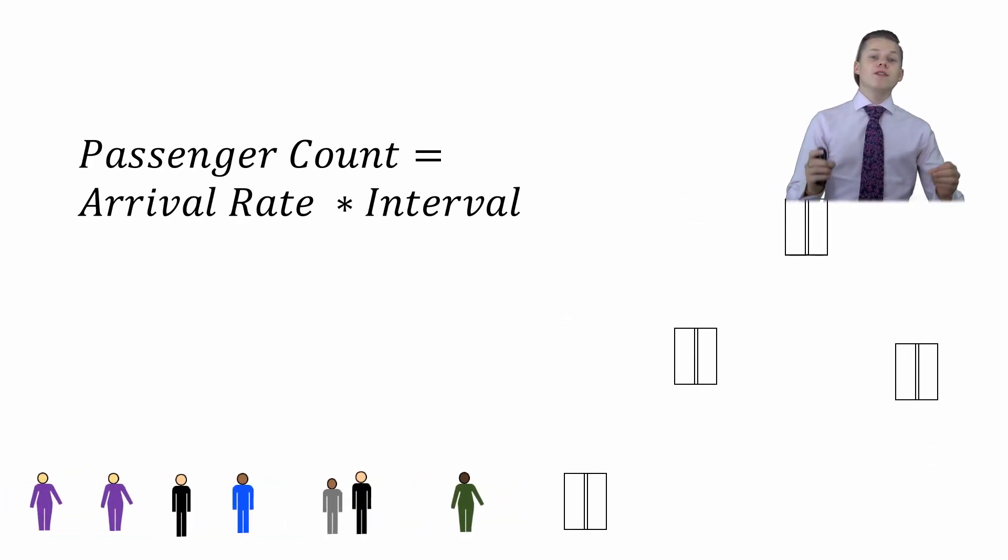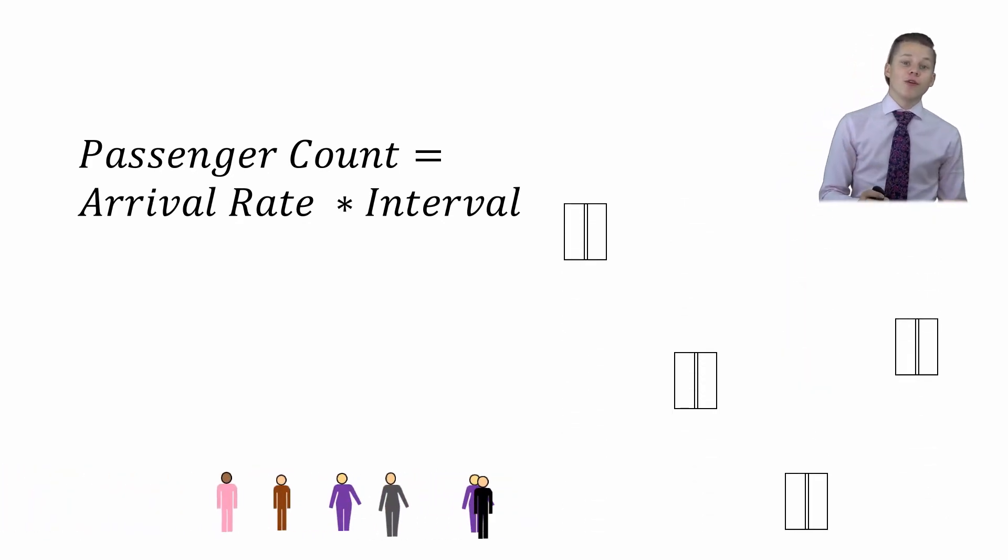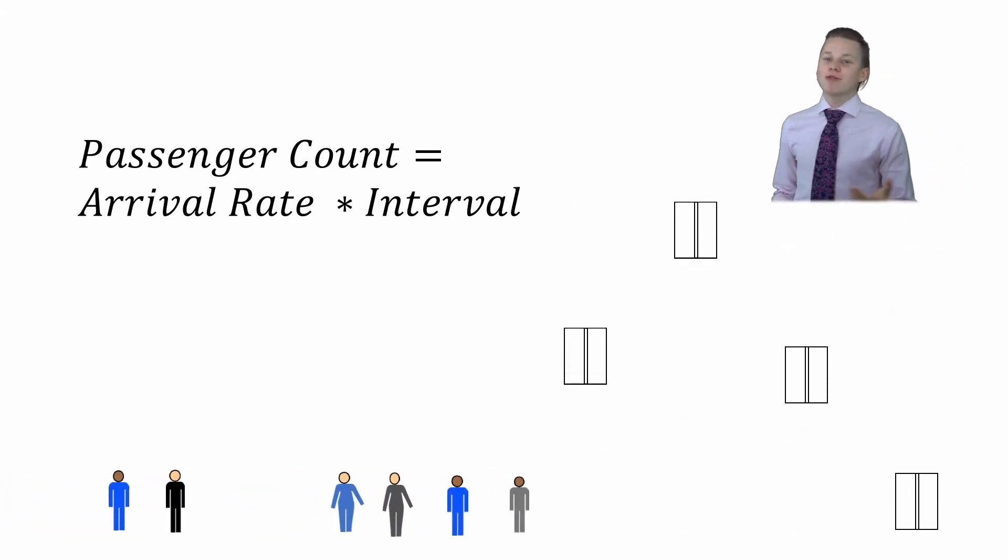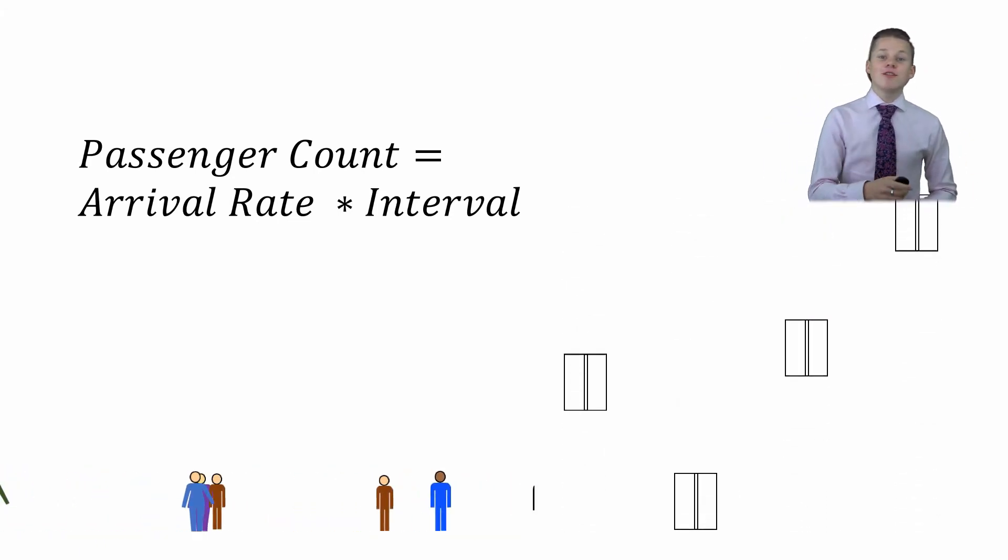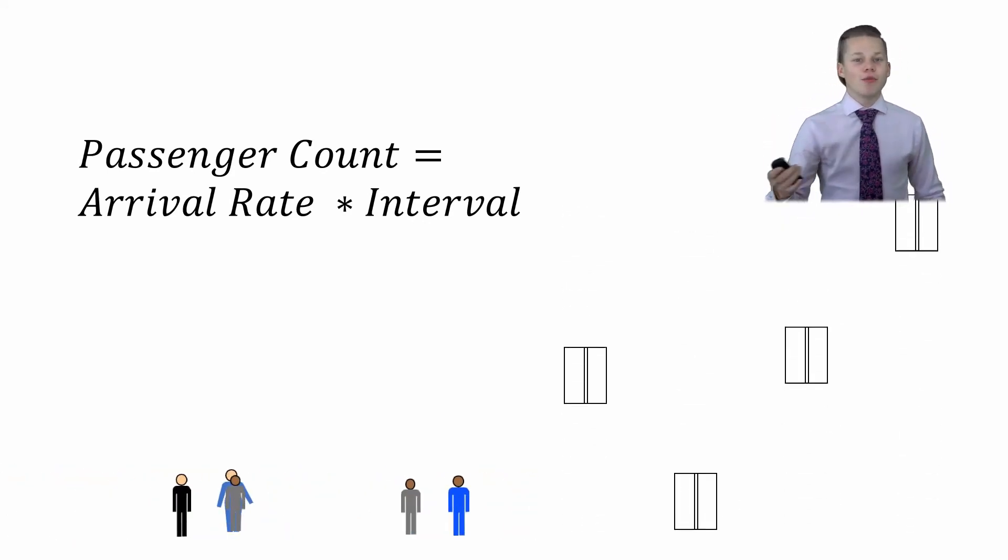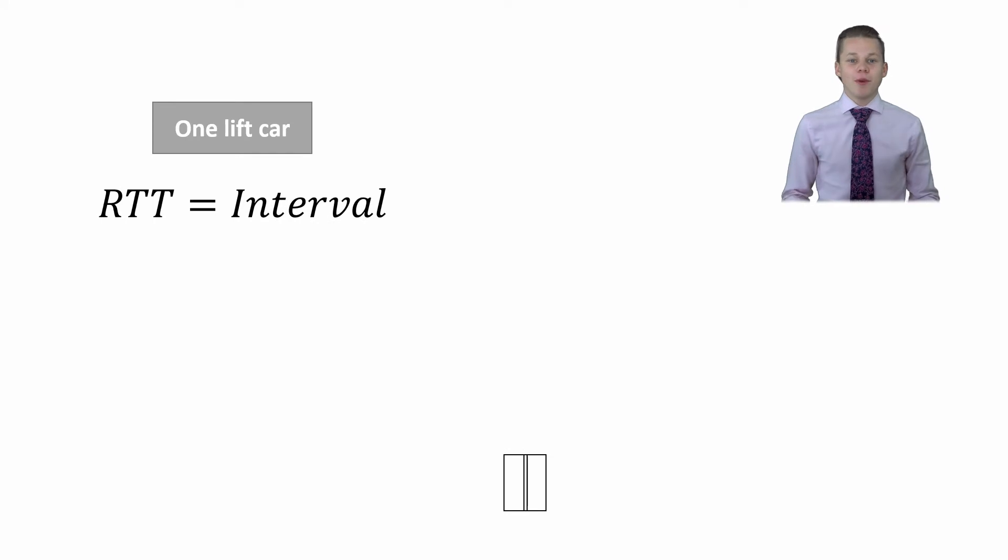This equation shows us how to find passenger count. So all we need to find out is the interval. What's an interval? The interval is the time between round trips beginning. This means that interval time will equal round trip time divided by the number of lifts. So if we simplify things a bit when there is only one lift, interval equals round trip time.